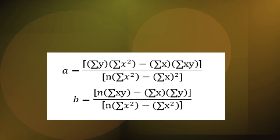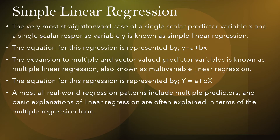The formula for intercept a is: a = (Σy · Σx² − Σx · Σxy) / (n · Σx² − (Σx)²). And b, the slope, is equal to n · Σxy minus Σx · Σy, divided by n · Σx² minus (Σx)².